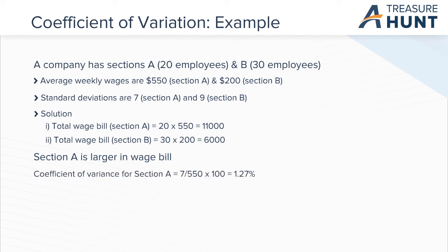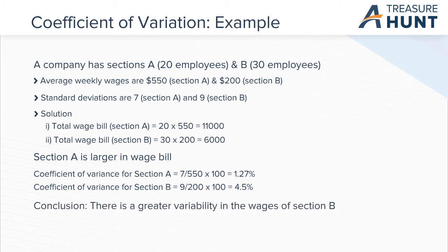Coefficient of variance for section A is equal to 7 divided by 550 times 100 equals 1.27%. Coefficient of variance for section B is equal to 9 divided by 200 times 100 equals 4.5%. Section A is more consistent, so there is greater variability in the wages of section B.